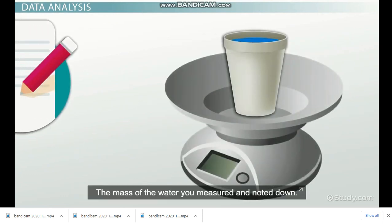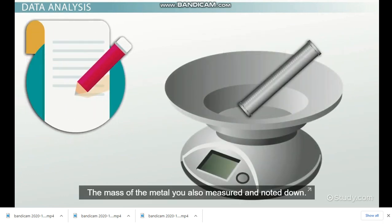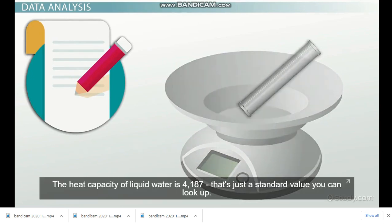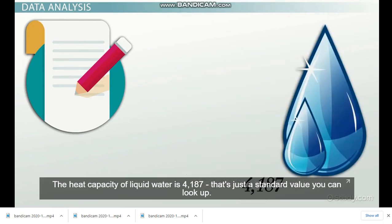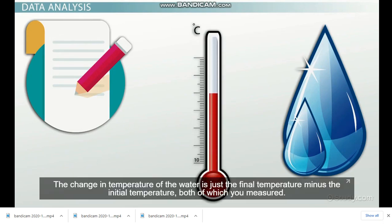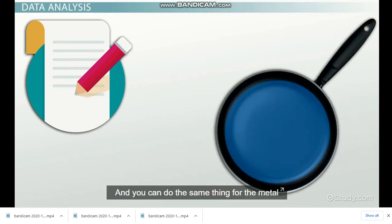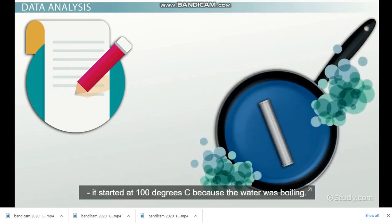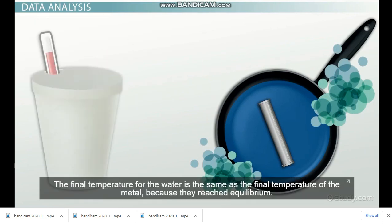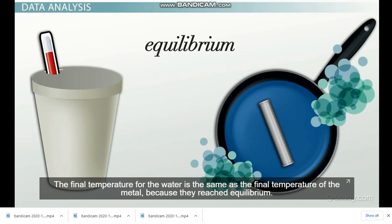The mass of the water you measured and noted down. The mass of the metal you also measured and noted down. The heat capacity of liquid water is 4187. That's just a standard value you can look up. The change in temperature of the water is just the final temperature minus the initial temperature, both of which you measured. And you can do the same thing for the metal. It started at 100 degrees C because the water was boiling. The final temperature of the water is the same as the final temperature of the metal because they reached equilibrium.